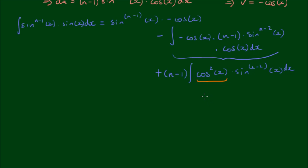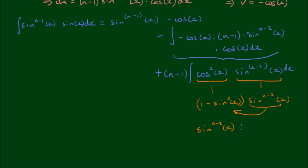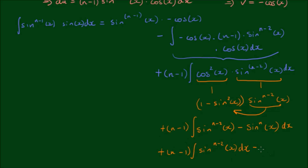By the Pythagorean identity, I can rewrite cosine squared of x as 1 minus sine squared of x, multiplied by sine to the n minus 2 power of x. Expanding into the parentheses gives sine to the n minus 2 power of x minus sine to the nth power of x. Copying the remaining parts and breaking this into two integrals, we get n minus 1 times the integral of sine to the n minus 2 of x dx, minus n minus 1 times the integral of sine to the nth power of x dx.